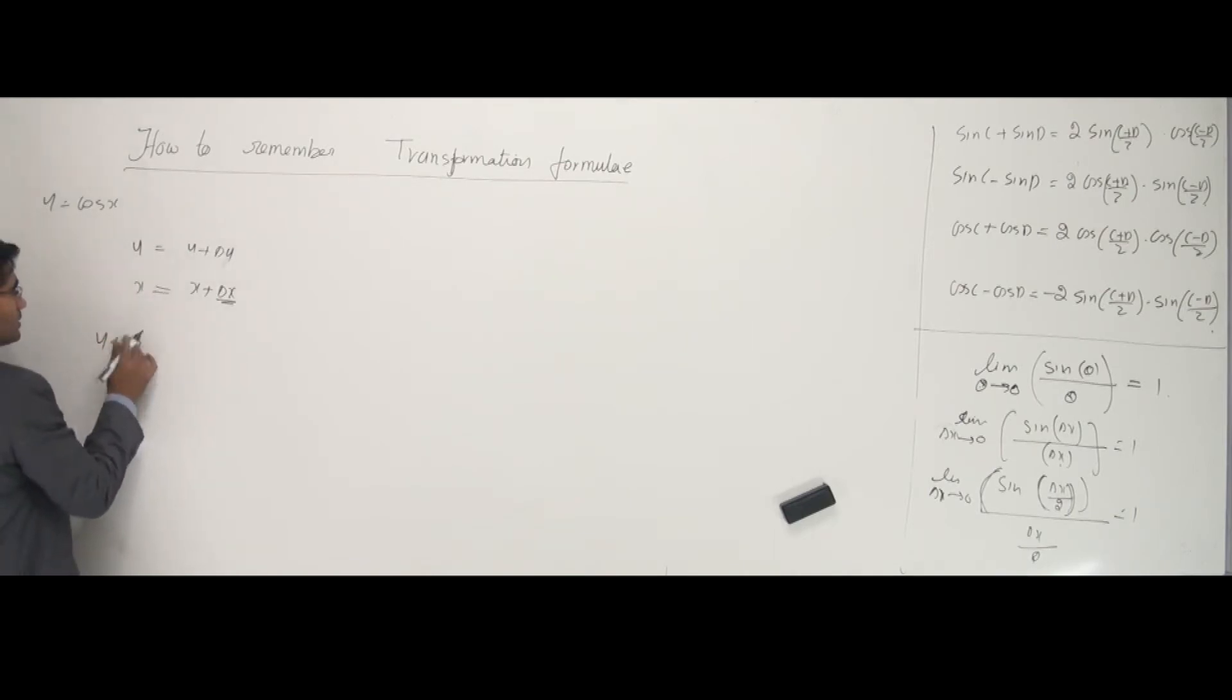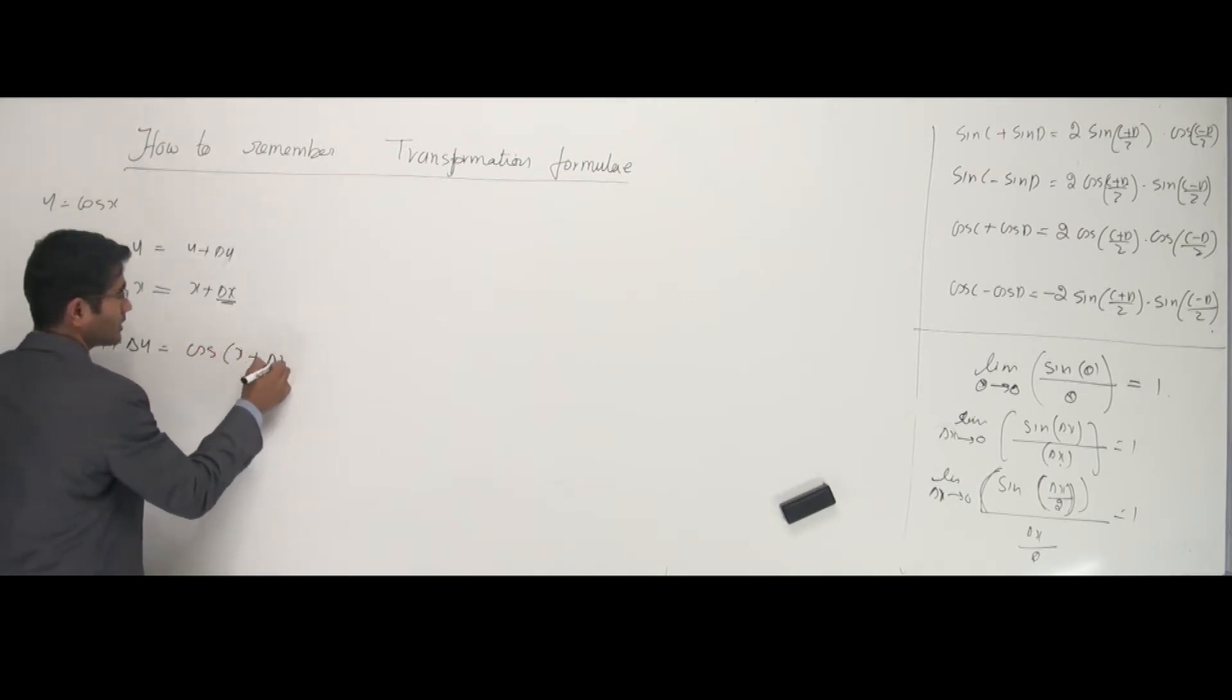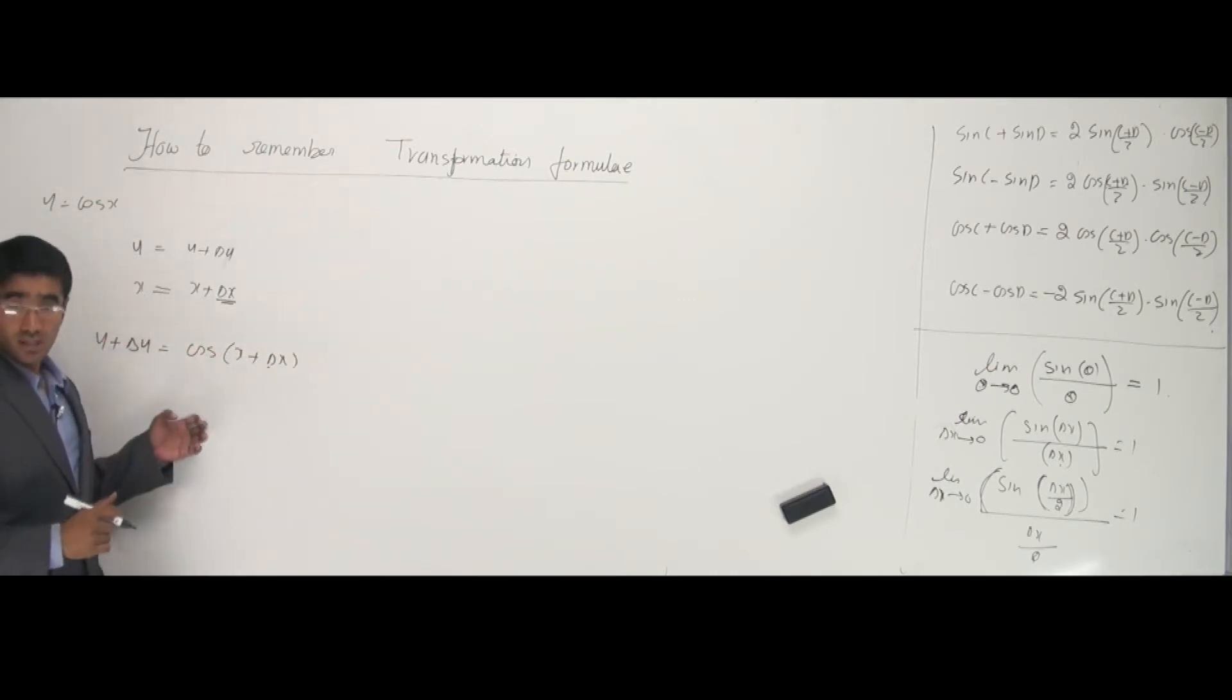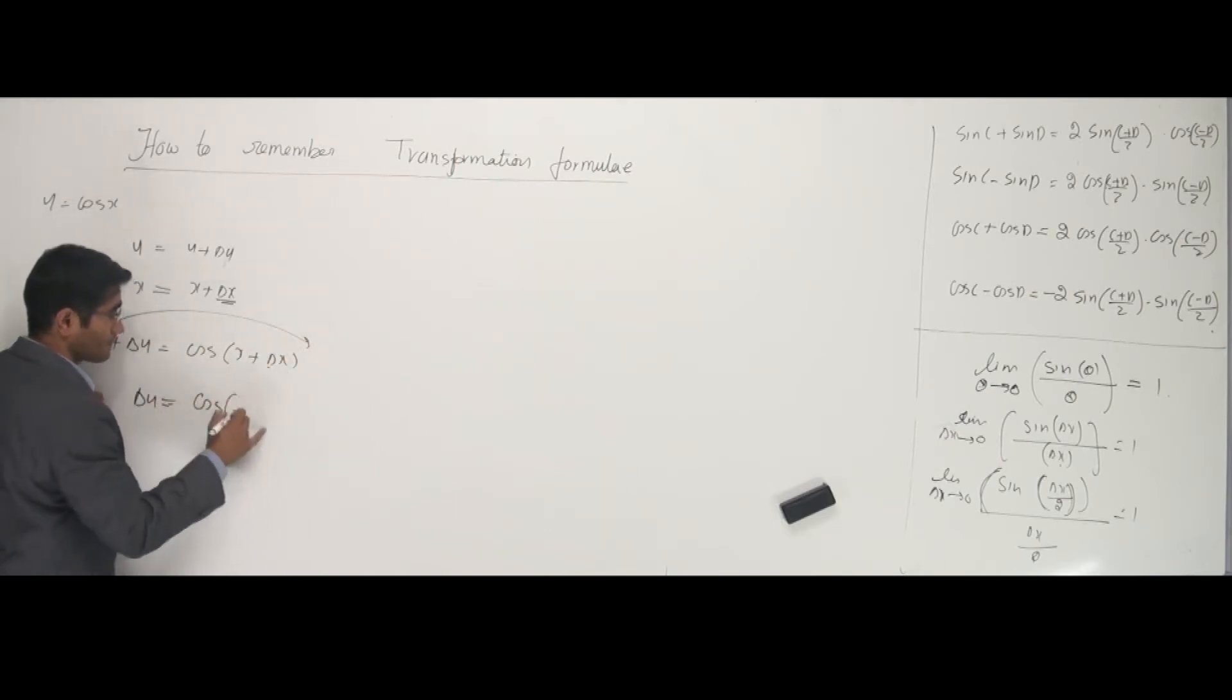So y plus delta y is equal to cos of x plus delta x. What the first stage says is: keep delta y on one side and put y on the other side, that gives us cos of x plus delta x minus y.